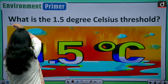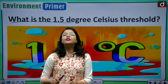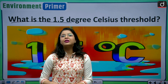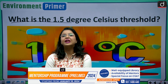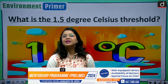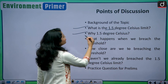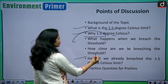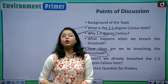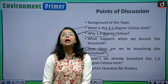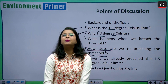Today we are going to discuss a very crucial topic that is often clouded with confusion. The title of today's discussion is: what is the 1.5 degree Celsius threshold? We will discuss what this threshold is, why we have kept it, what happens if we breach it, and whether we have already breached it. We will also look at a practice question for your prelims examination.